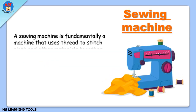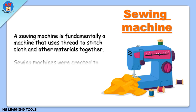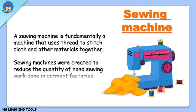Sewing machine. A sewing machine is fundamentally a machine that uses thread to stitch cloth and other materials together. Sewing machines were created to reduce the quantity of hand sewing work done in garment factories.